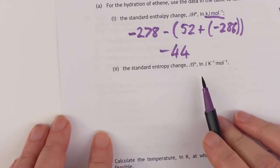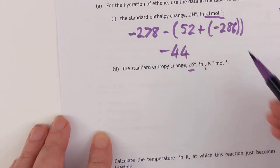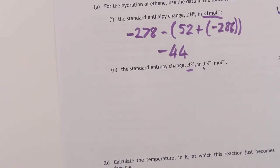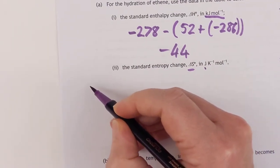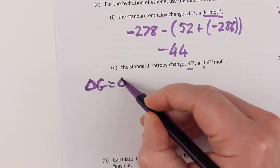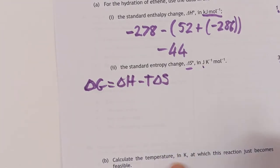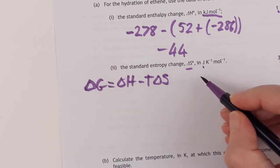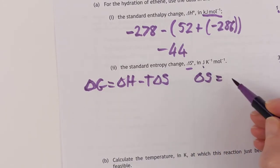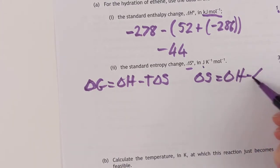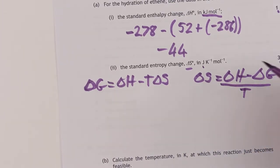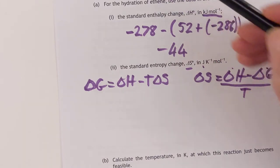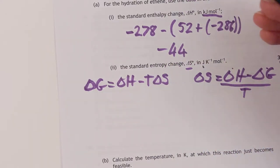Standard entropy change, ΔS — now that's joules per Kelvin per mole, not kilojoules. That's also a three-marker. So how do we go about this? We need to use the fact that ΔG = ΔH − TΔS. So we're basically solving for ΔS here, which means ΔS = (ΔH − ΔG) / T. We know ΔH because we just worked it out, and we can work out ΔG from the table using a similar approach.